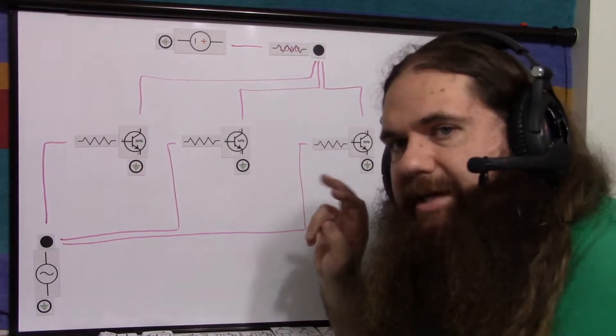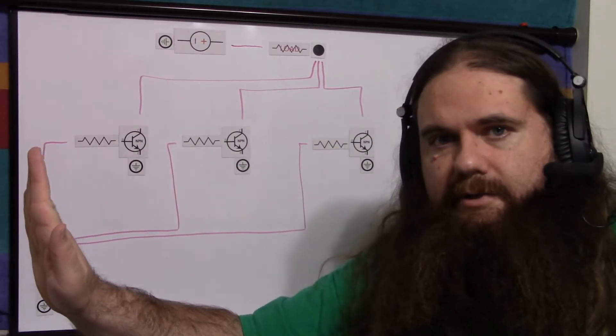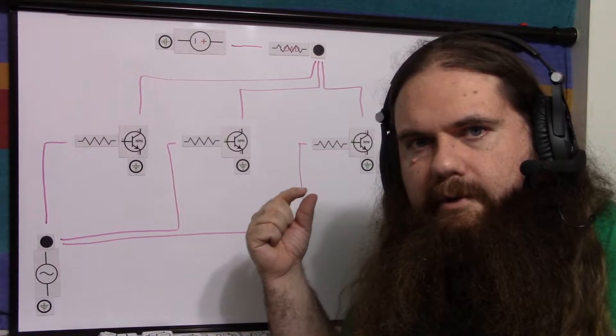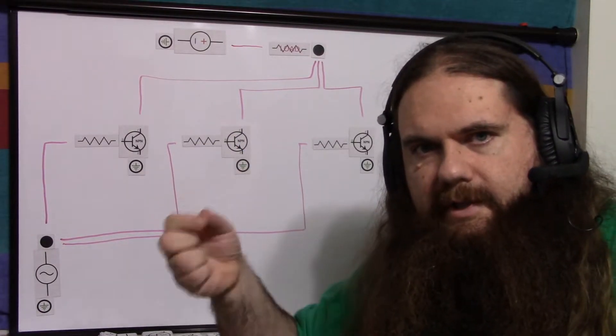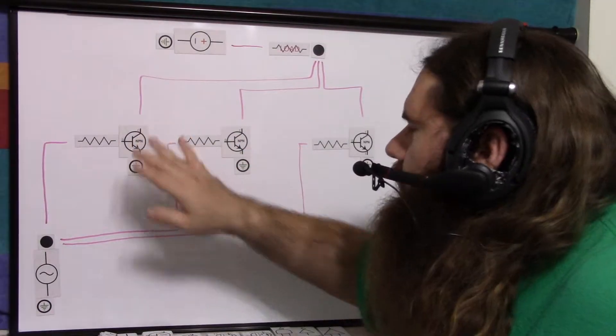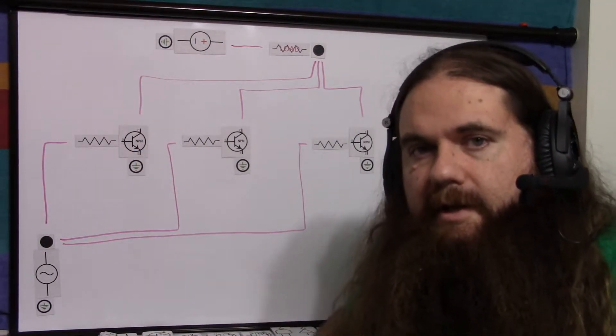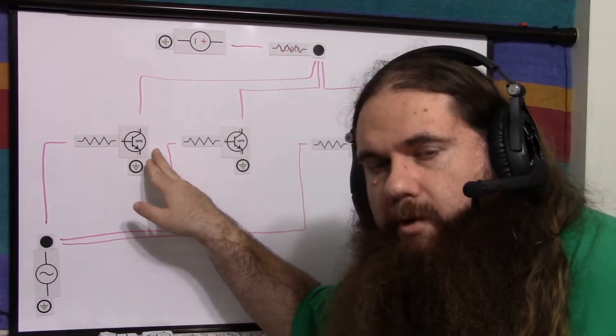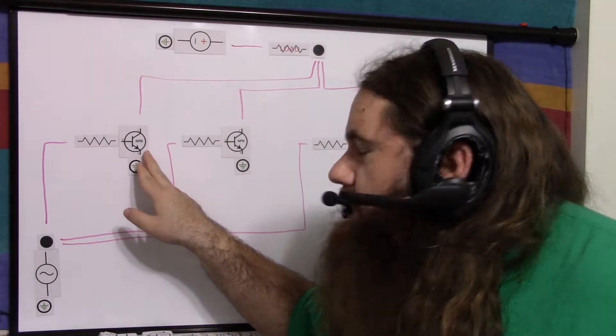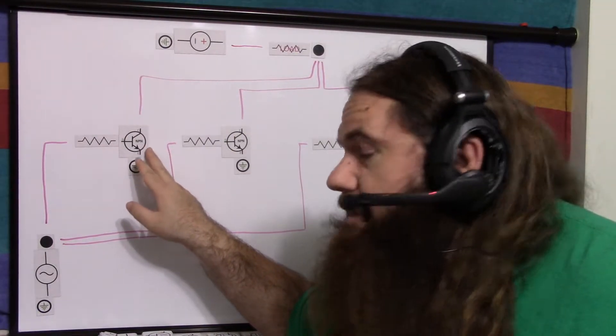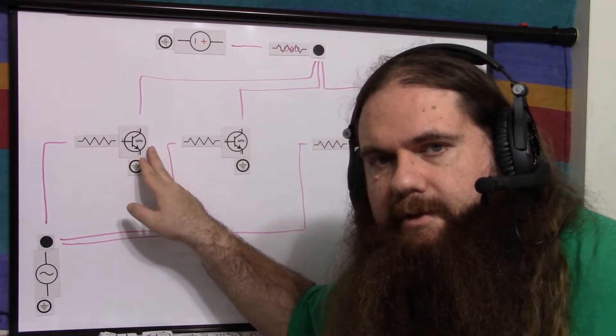One of them might still be at a slightly different temperature because that's closer to the fan or you've got a glob of solder on this one that's pulling heat away a tiny bit better. One of these is a little warmer than the others, which means it conducts a little bit better than the others. So more current starts going through this one, which means it gets warmer, which means it conducts a little better. More current starts going through it and it gets warmer.